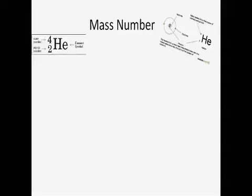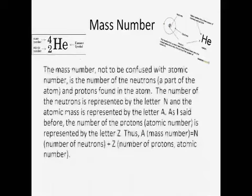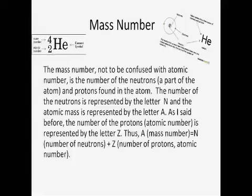The mass number. The mass number, not to be confused with the atomic number, is the number of neutrons, a part of the atom, and protons found in the atom. The number of neutrons is represented by the letter N, and the atomic mass is represented by the letter A. As I said before, the number of protons is represented by the letter Z. Thus, A, the mass number,